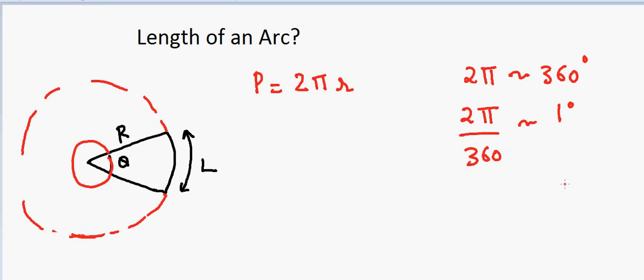So if that's the case, then theta degrees should be proportional to 2π theta divided by 360, or I can also write it as π theta divided by 360, right?